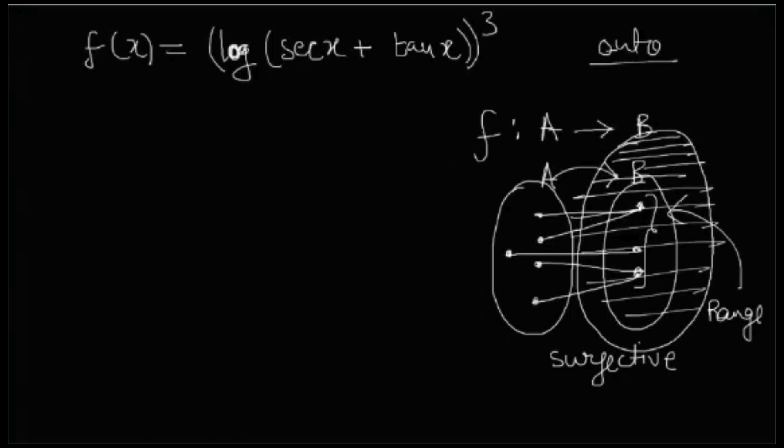So in the equation, it's given that F from minus pi by 2 to pi by 2, and the codomain is R. Now if you can show that the range of F is R, then your work is done.